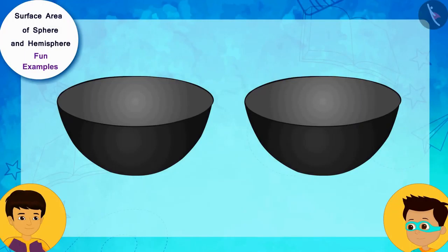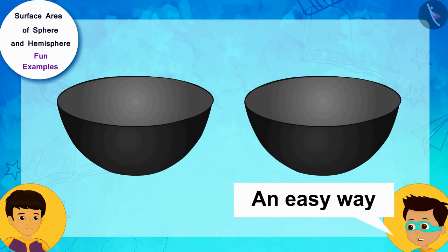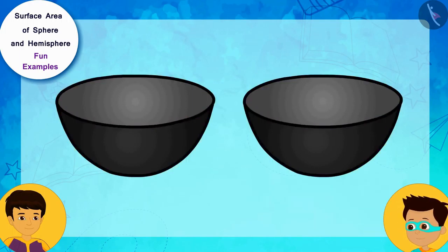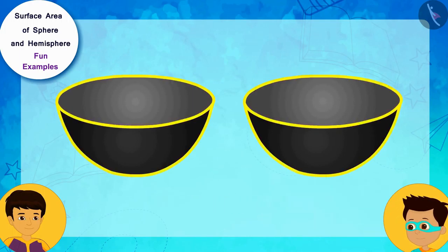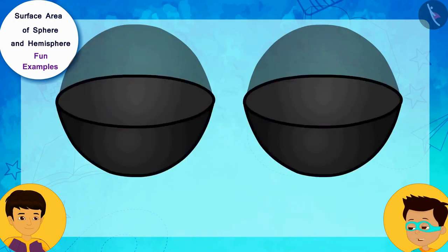Oh, this is very easy. Let me show you an easy way to remember this. These bowls are hemispheres, and every hemisphere is half of a sphere.